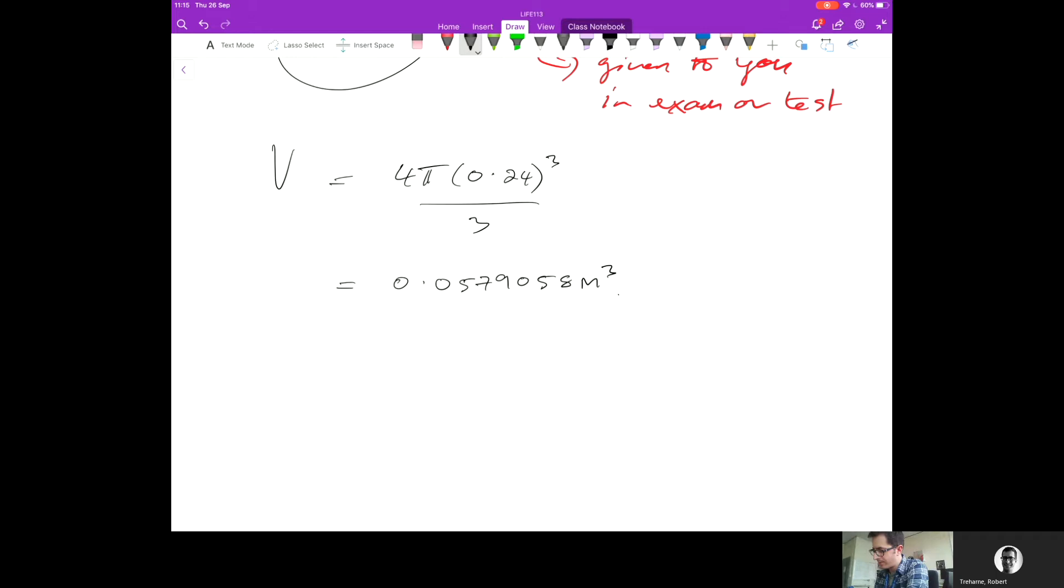I'd like you to express your answer from any calculation to the correct number of significant figures. How do you know the correct number? That depends on the values you're putting into the calculation. In this case, the radius is expressed to two significant figures: one, two. Not three, ignore the zero.